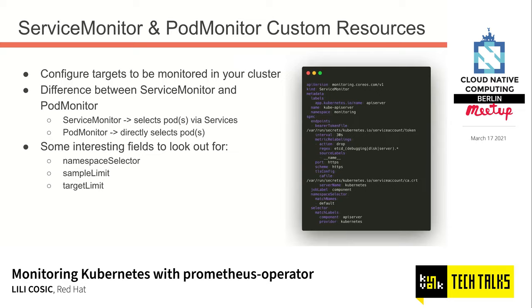A couple of interesting fields worth configuring, especially if you control all the ServiceMonitors or PodMonitors, are the sample and target limits. These are useful when you want to limit the amount of data a single configuration can produce — very useful in a multi-tenant environment or when you don't know what your users are doing and want to prevent high unbound cardinality series. They are a fairly recent addition.